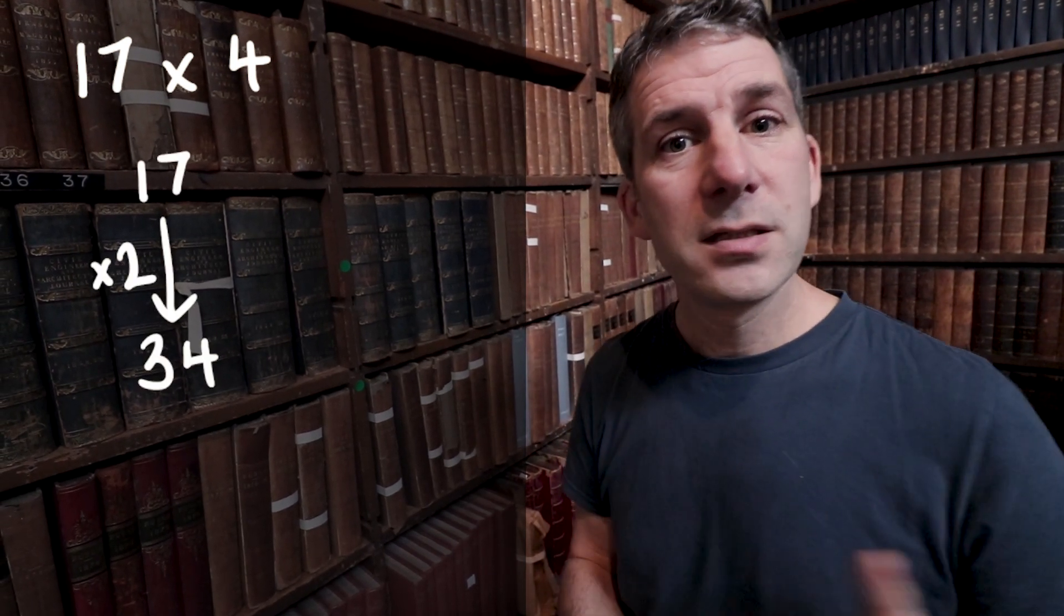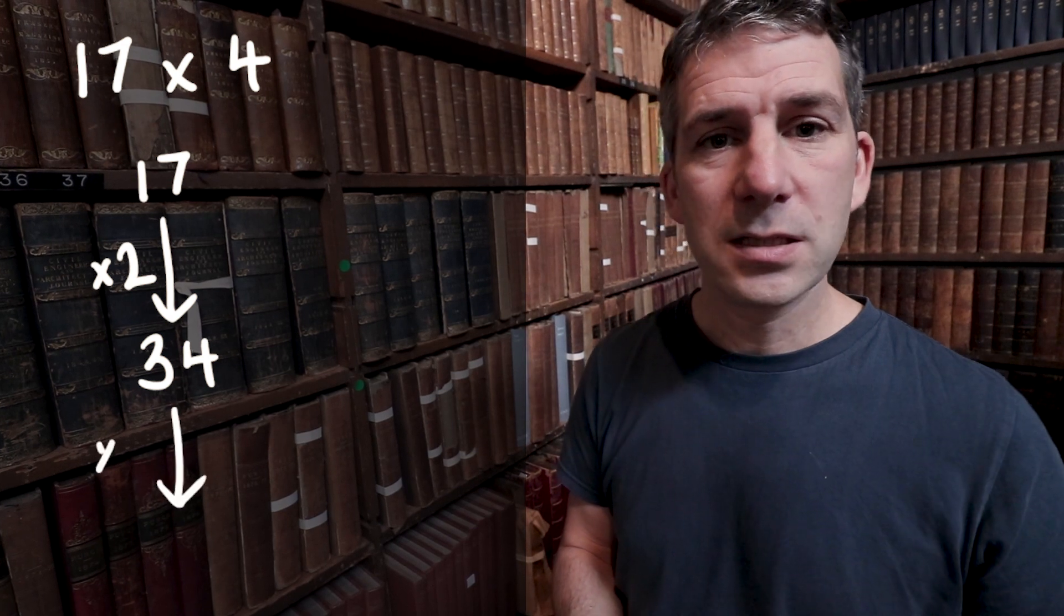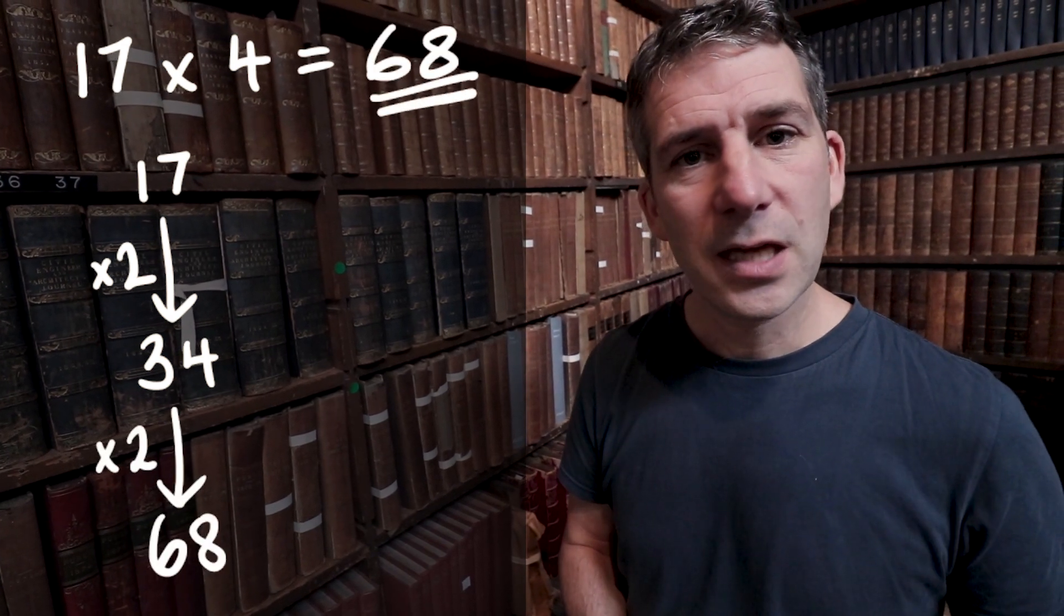So let's say I want to do 17 multiplied by 4. 17 times 4. I'm going to do 17 times 2, I'm going to double 17, which is 34. And then double it again, which is 68. So 17 times 4 is 68.